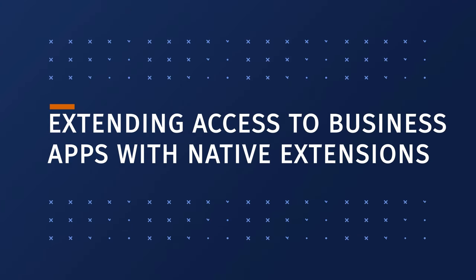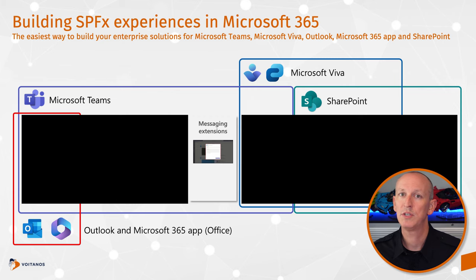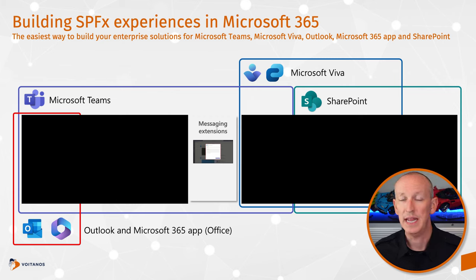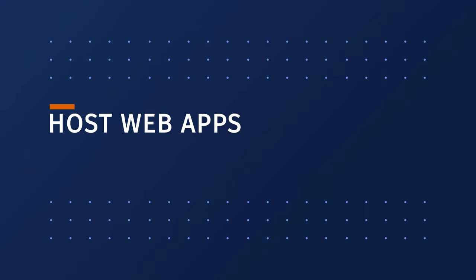The second option is to use native capabilities in one of the Microsoft 365 hosted experiences, like Microsoft Teams, to integrate your existing business applications. For example, message extensions and bots in Microsoft Teams use web services that expose customer data or other business data within a native experience in the Teams client.